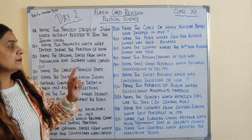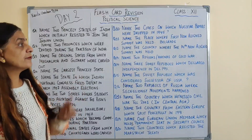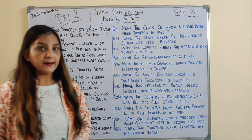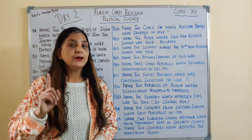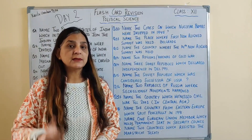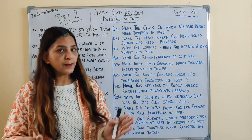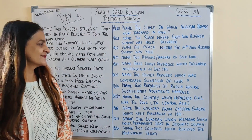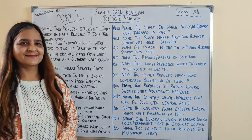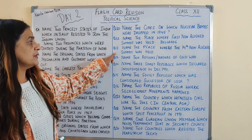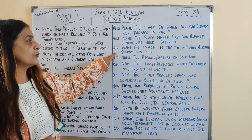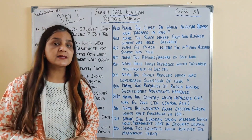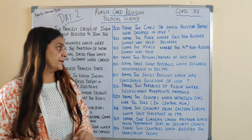Next question: name the place where the first Non-Aligned Summit was held. Pehla Non-Aligned Summit kahan pe hua tha — Belgrade mein hua tha. Question number 12: name the place where the 14th Non-Aligned Summit was held, and the answer is Havana.